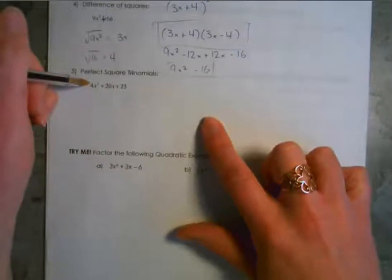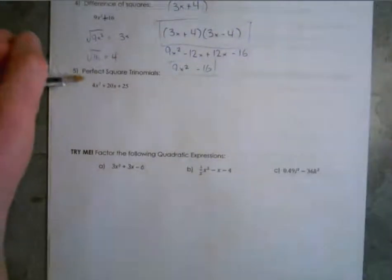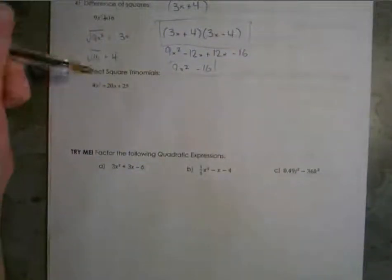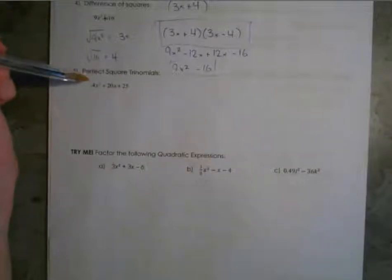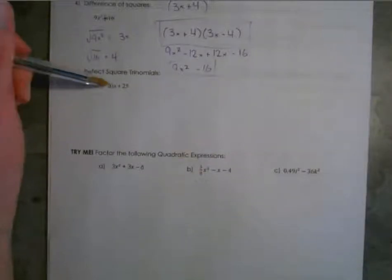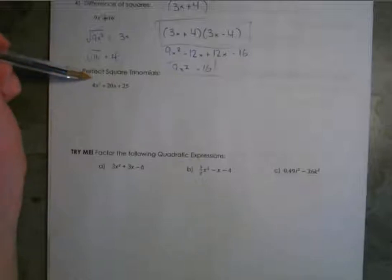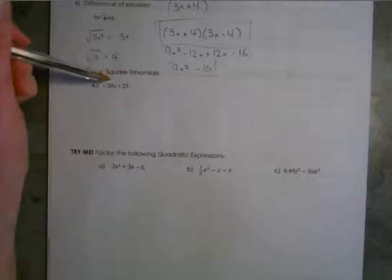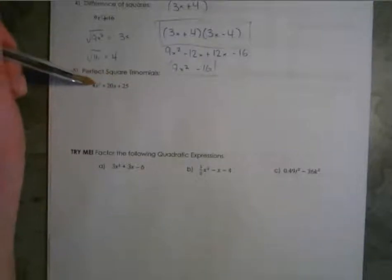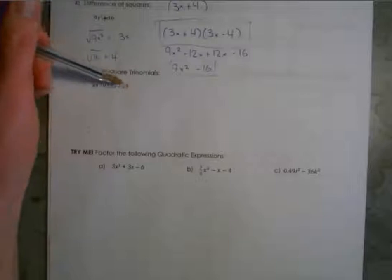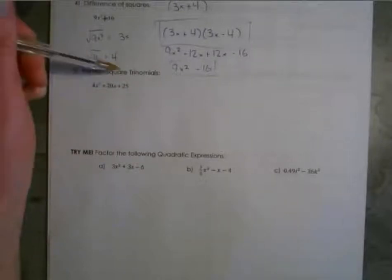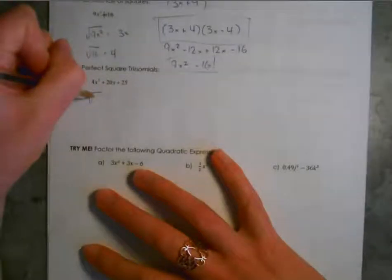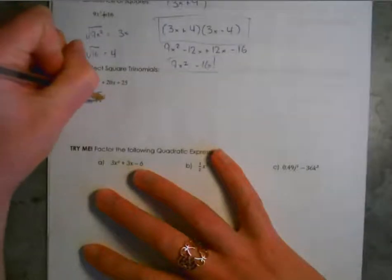Now let's look at perfect square trinomials, which is pretty similar to what we just did. Before deciding on a method, it's helpful to check whether the number values are perfect squares. You don't need to look at the middle value — just the first and last terms. 4 square roots to 2, and 25 square roots to 5. Because those are perfect squares, we do the same thing as with difference of squares and square root them. Square root of 4 is 2, square root of x squared is x, square root of 25 is 5.